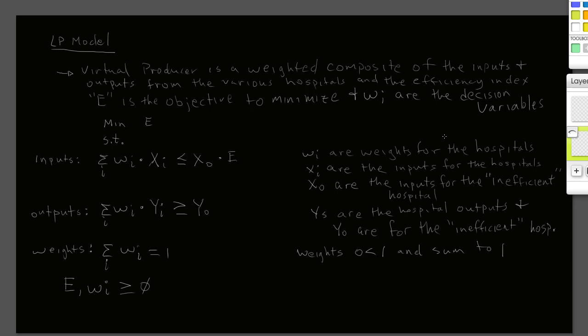The inputs are the sums of the weights times the actual quantity of that input used by the hospitals. We sum those up, and they have to be less than or equal to the hospital we're looking at — in this case, county hospital. That hospital's value is the x-naught term times our efficiency index E. So on the input side, we're asking: can we produce at least the same output with the same or less input than county is using?